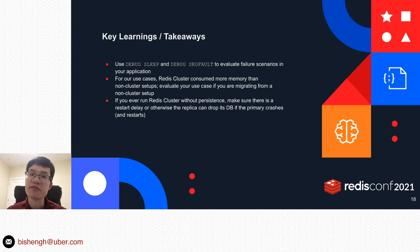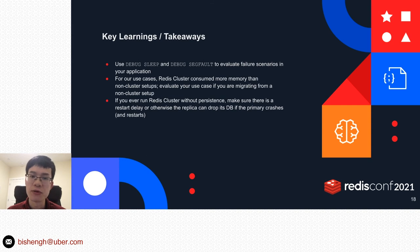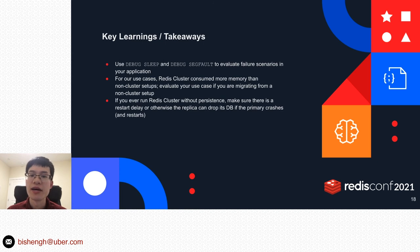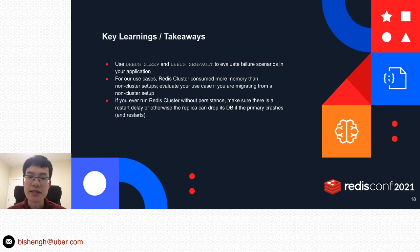Here are some key takeaways. First, two commands we found very useful during cluster evaluation are DebugSleep and DebugSegfault — you can use them to simulate error scenarios like a network issue or a Redis server crash. Second, Redis cluster consumes more memory than a non-cluster setup, so be aware of memory consumption if you are migrating. Third, if you run Redis cluster without persistence, make sure there is a restart delay. Otherwise, a replica can drop its data if the primary crashes and restarts immediately, because there is not enough time for the replica to take over and all the data on the node will be lost.